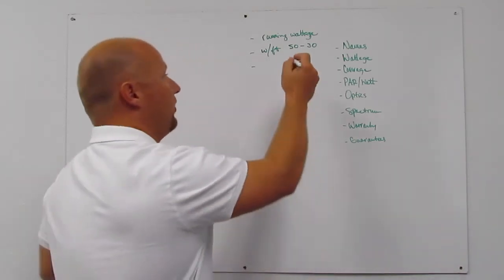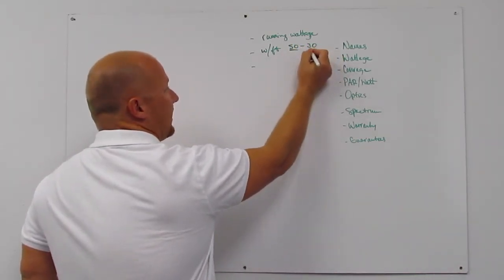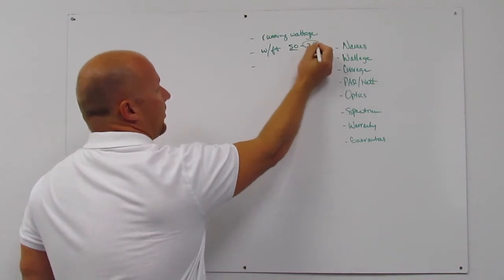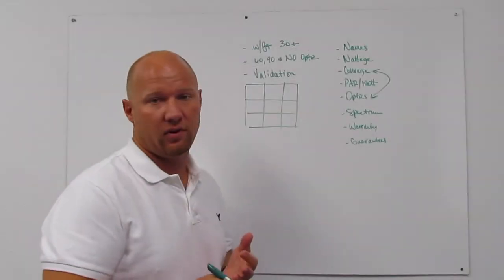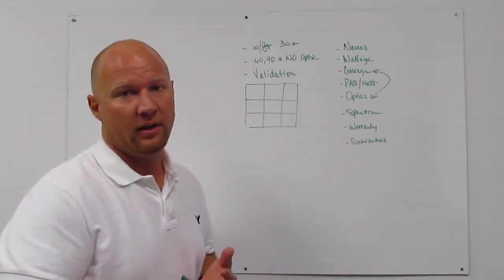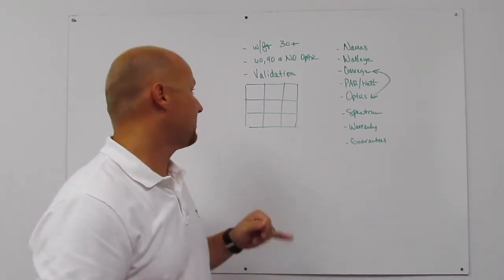That's a key indicator - watts per foot. In HID, you're looking at 50; with LED, around 30 to 35. The big thing you need to start with first is watts per foot to get the total wattage that you need for the space.